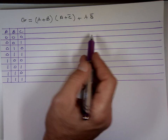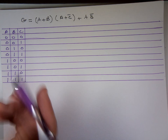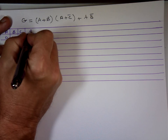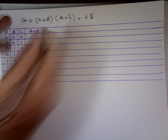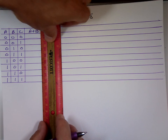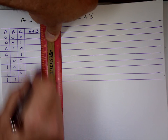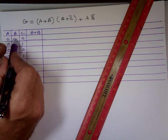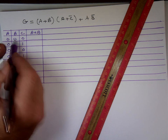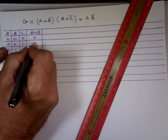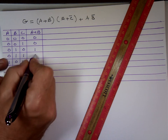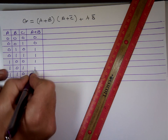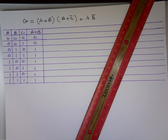They want to find the answer using the truth table, so we need to find A plus B. The OR gate gives a one when one of the inputs is one. So going through the rows: that's zero, zero, one, one, one, one, one, one. An OR gate gives one when at least one input is one.